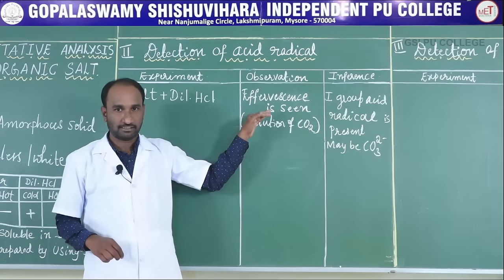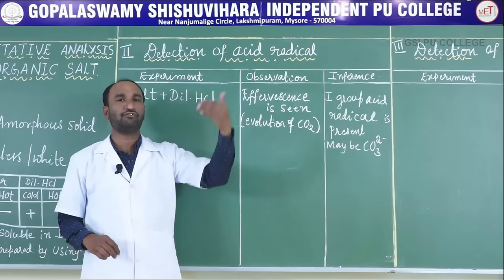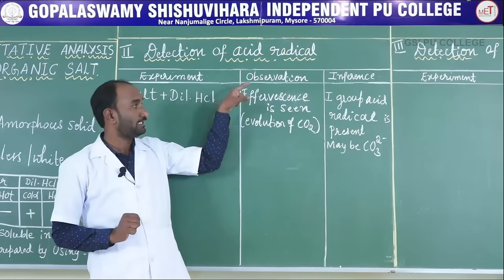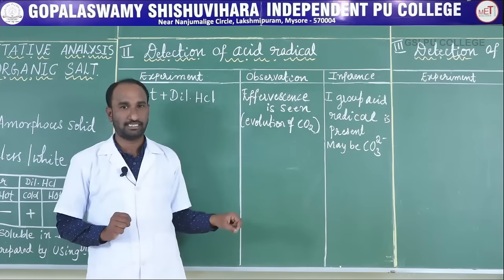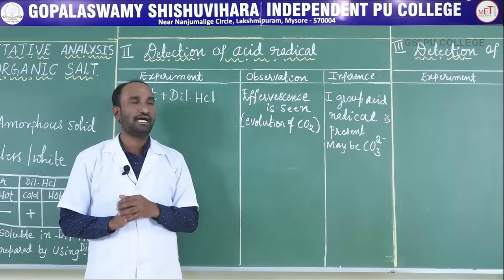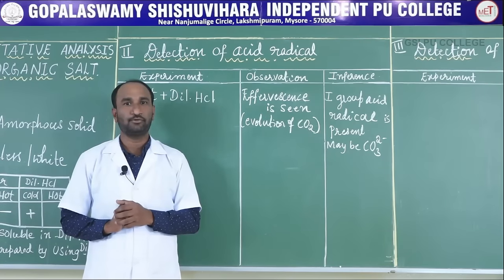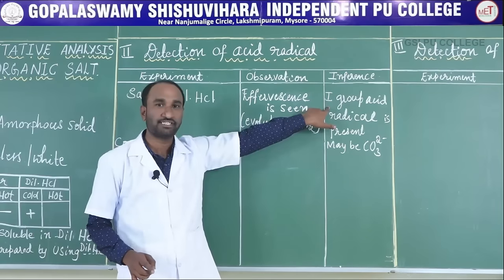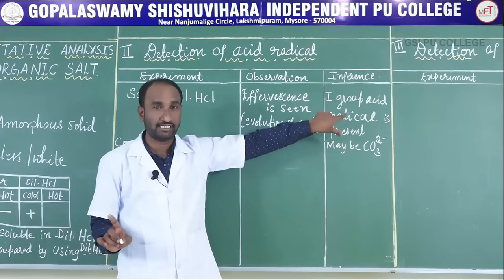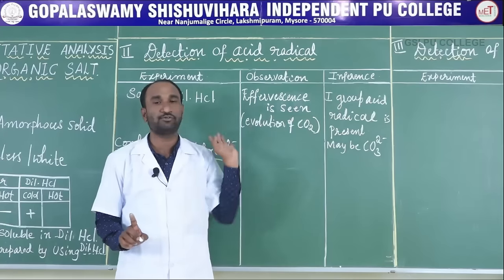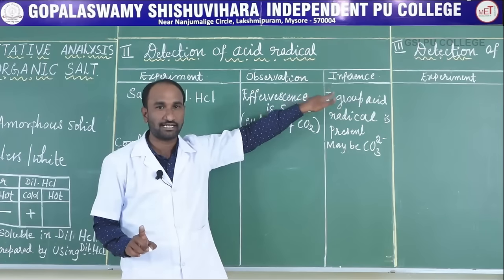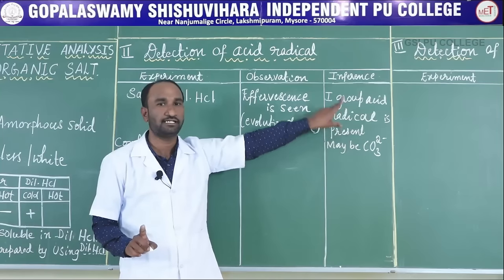Since the first group acid radical is present (possibly CO3²⁻), proceed to the confirmatory test. If there is no effervescence, go for the second group instead. First group present means CO3²⁻ is suspected. Write 'first group acid radical is present, maybe CO3²⁻' for 2 marks.